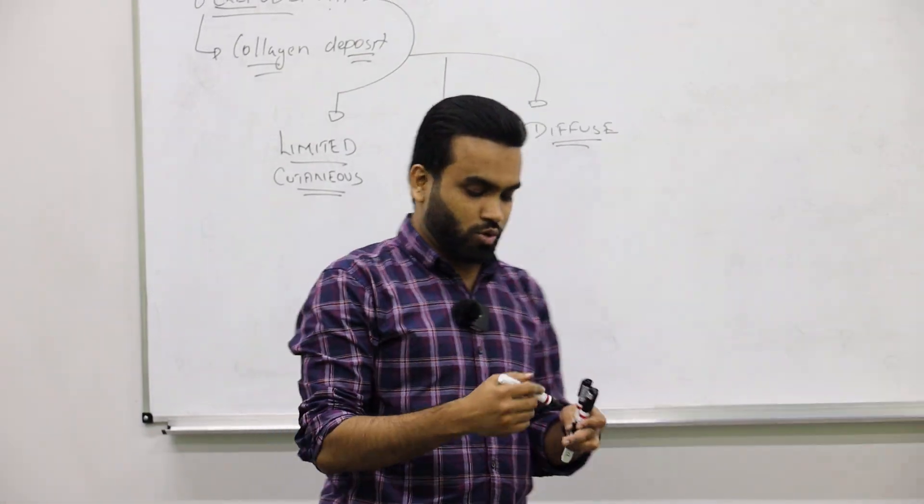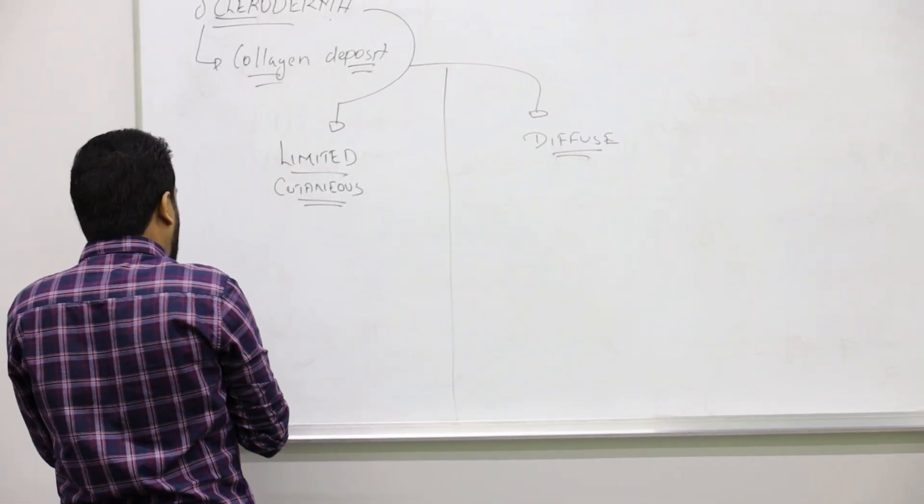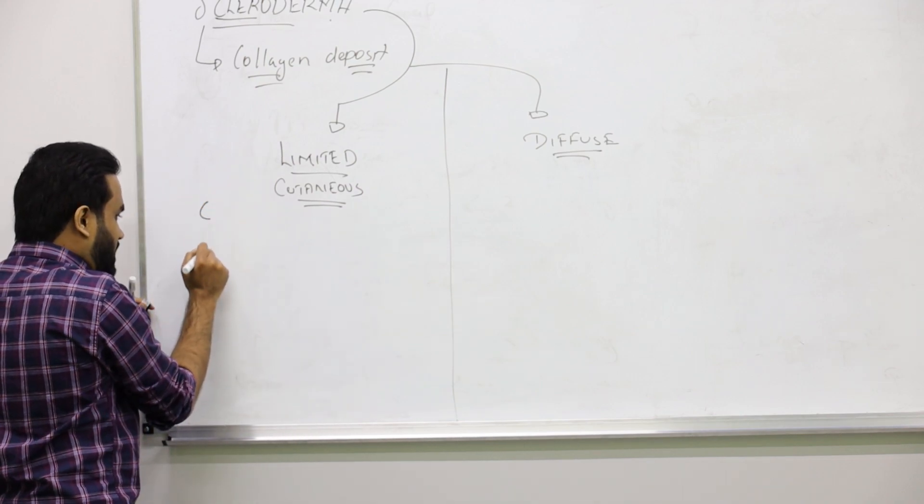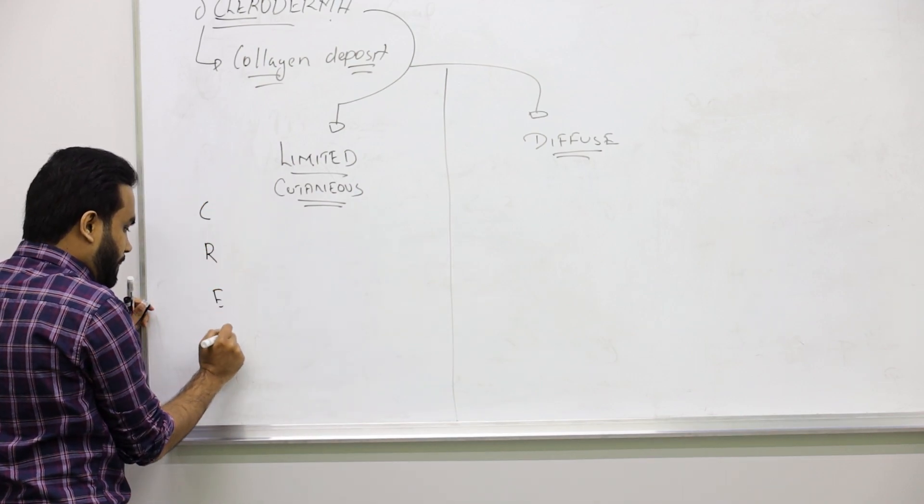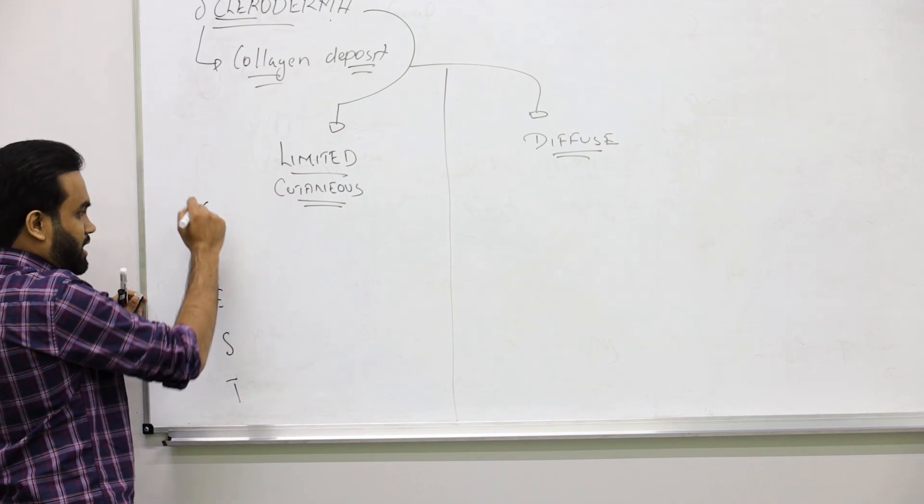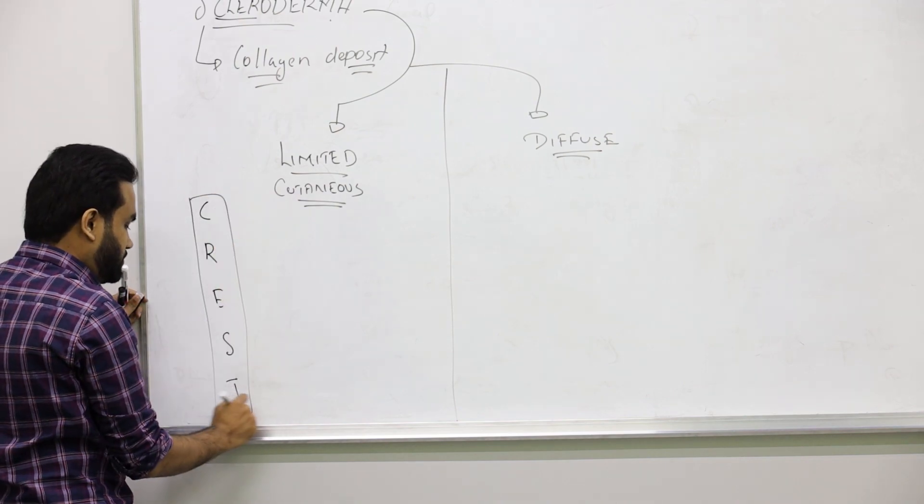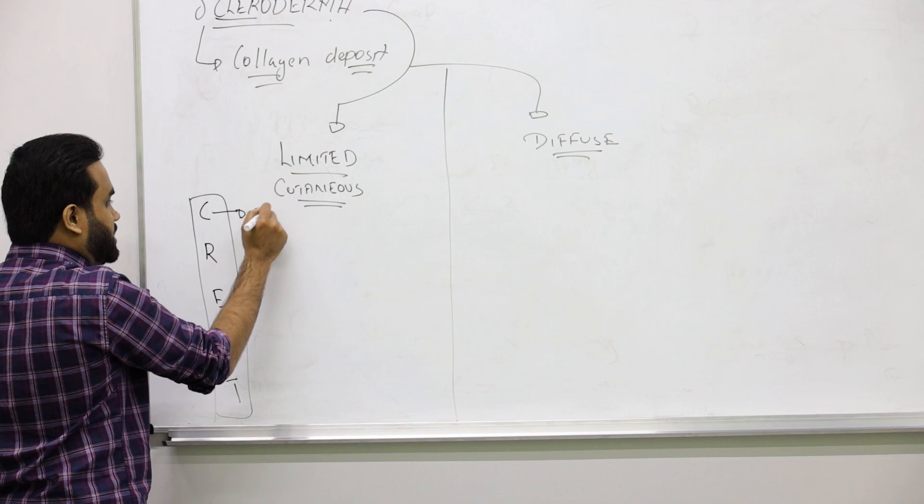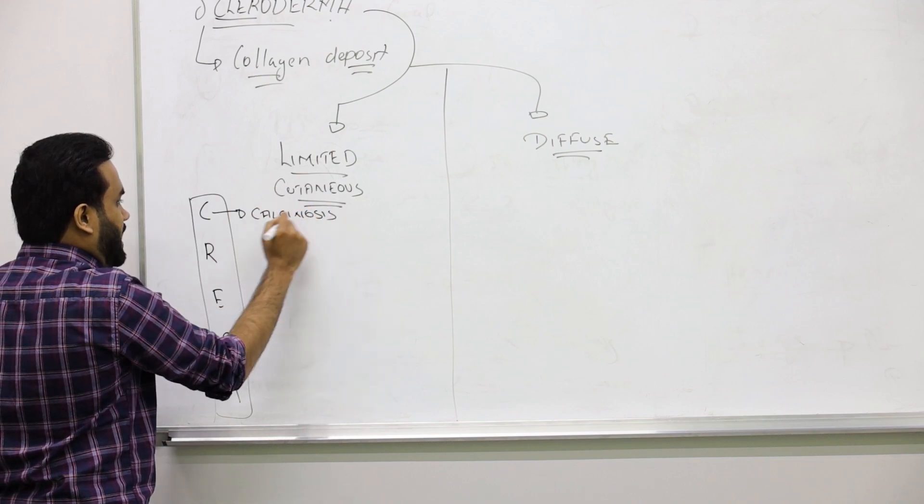Limited cutaneous has another name we call it CREST syndrome, very easy to remember. C is for calcinosis - imagine a lot of calcium in the blood, as a result the patient can have increased blood pressure.